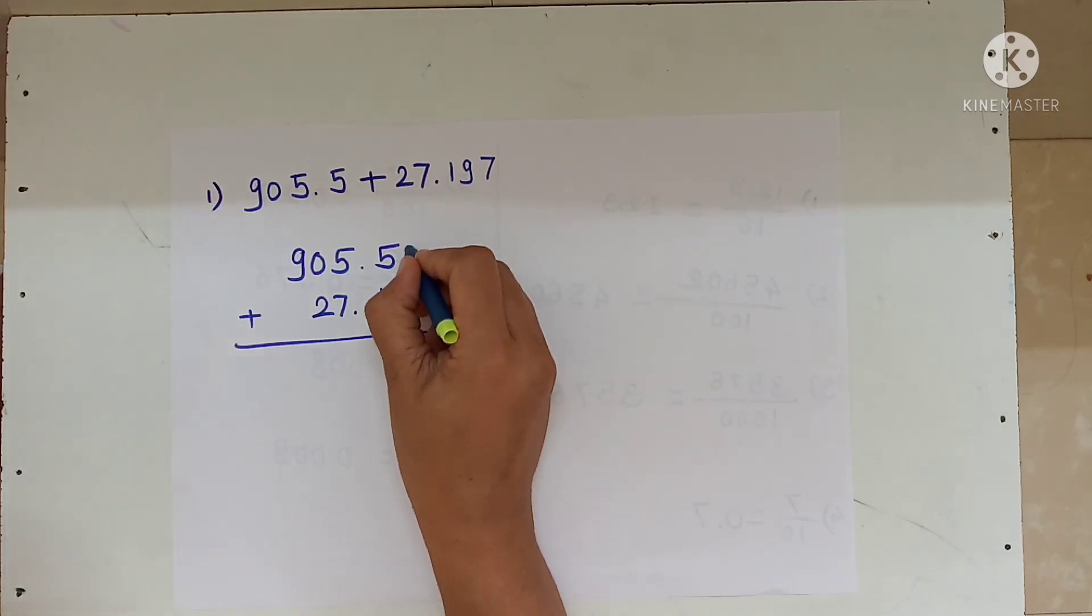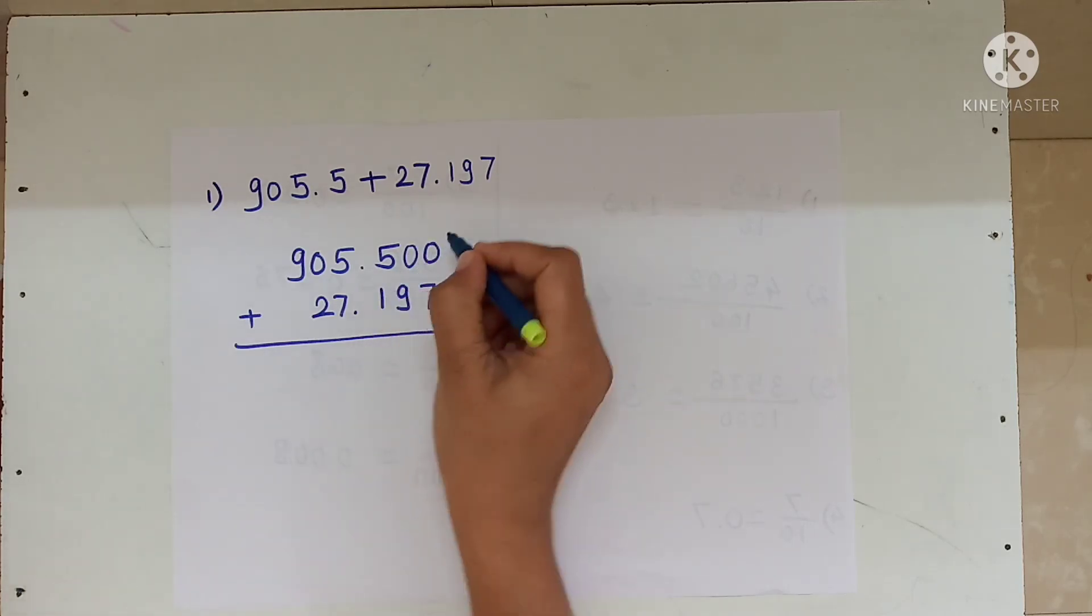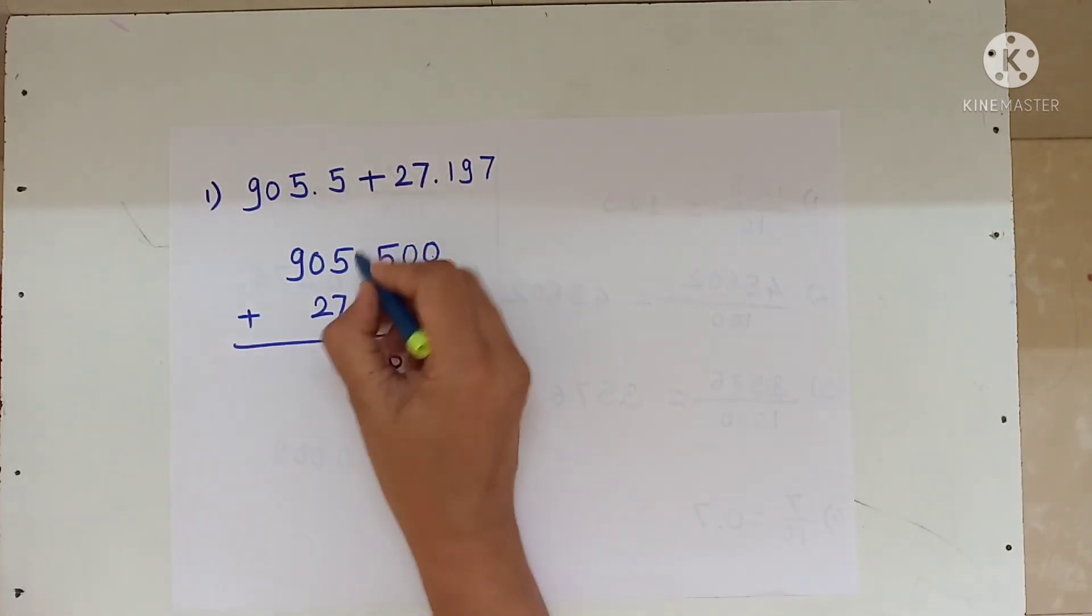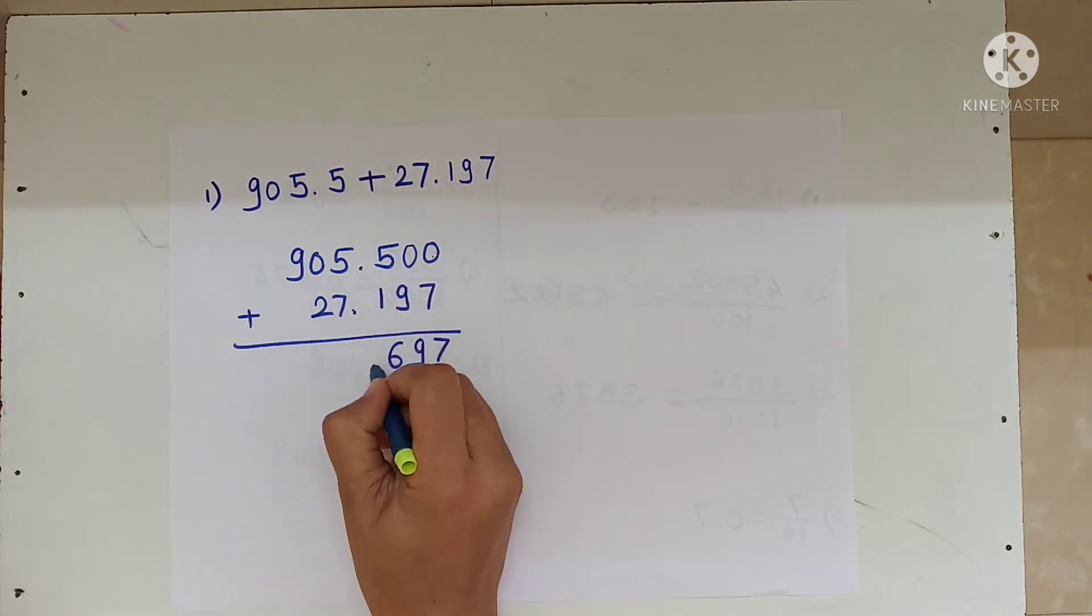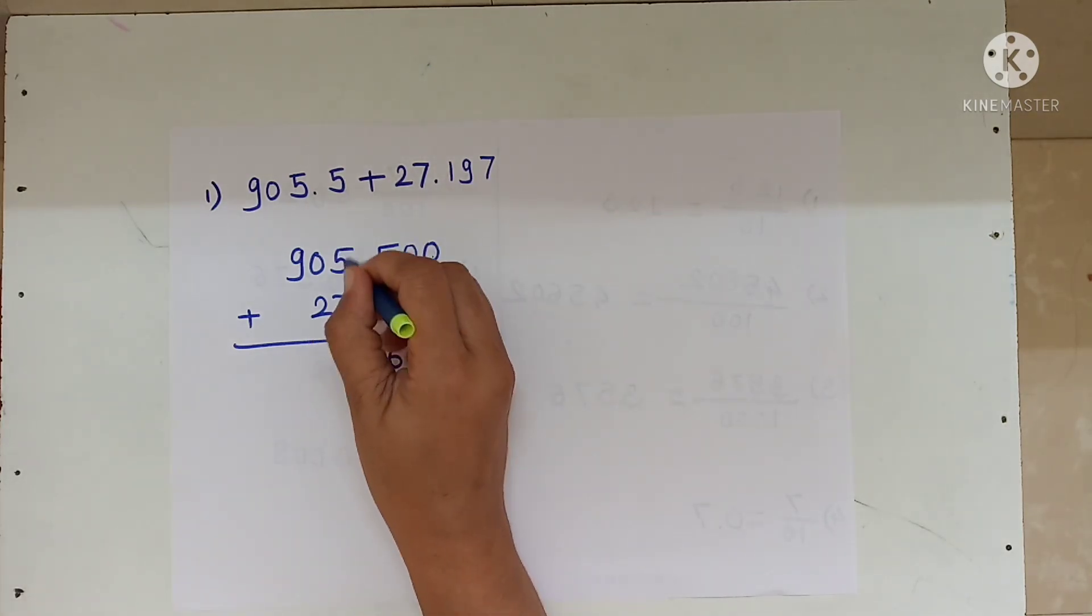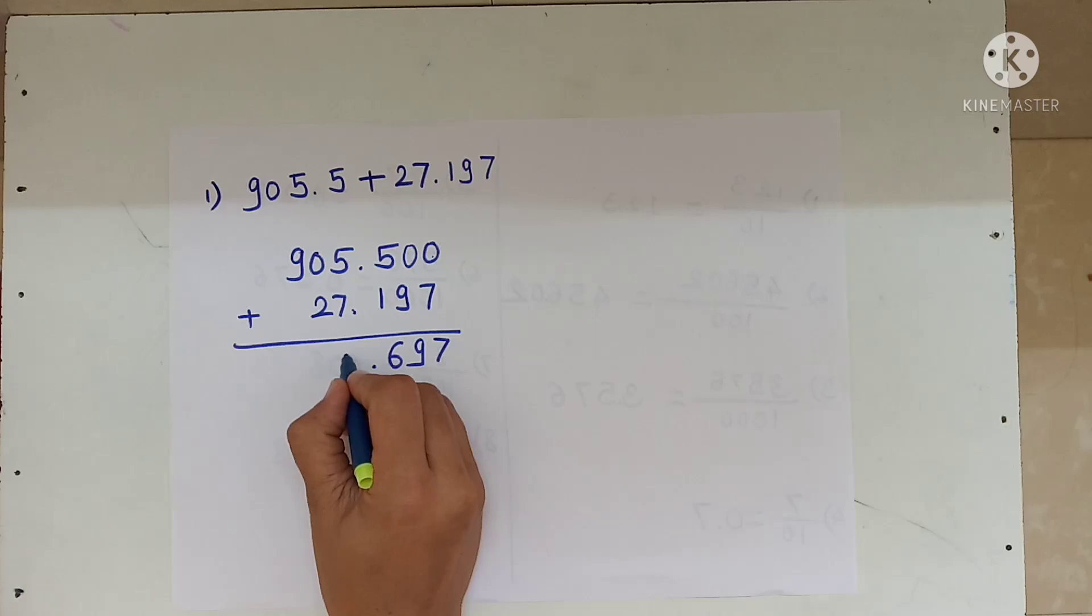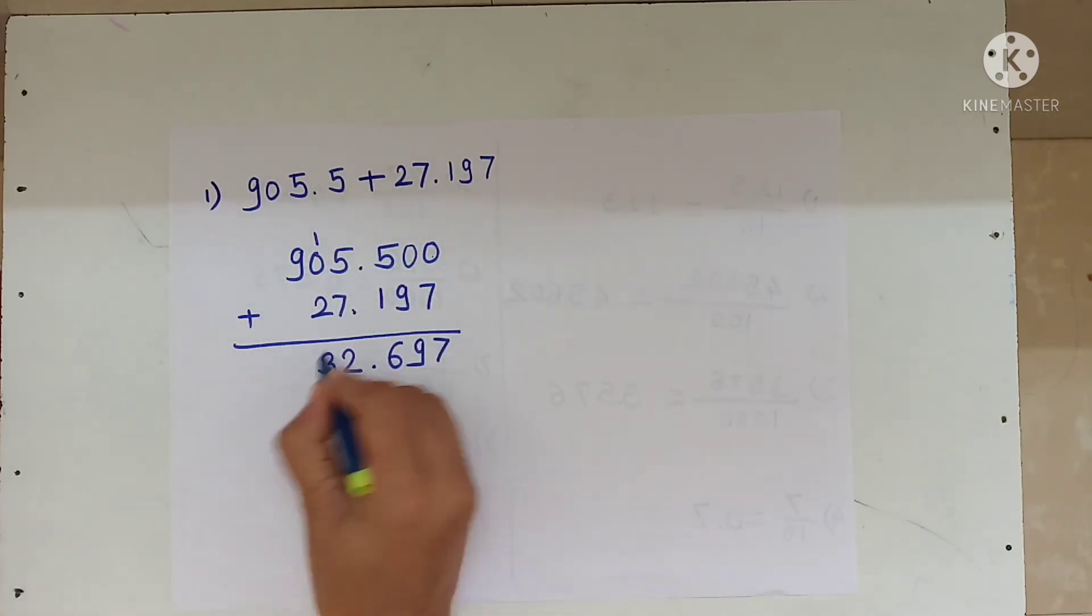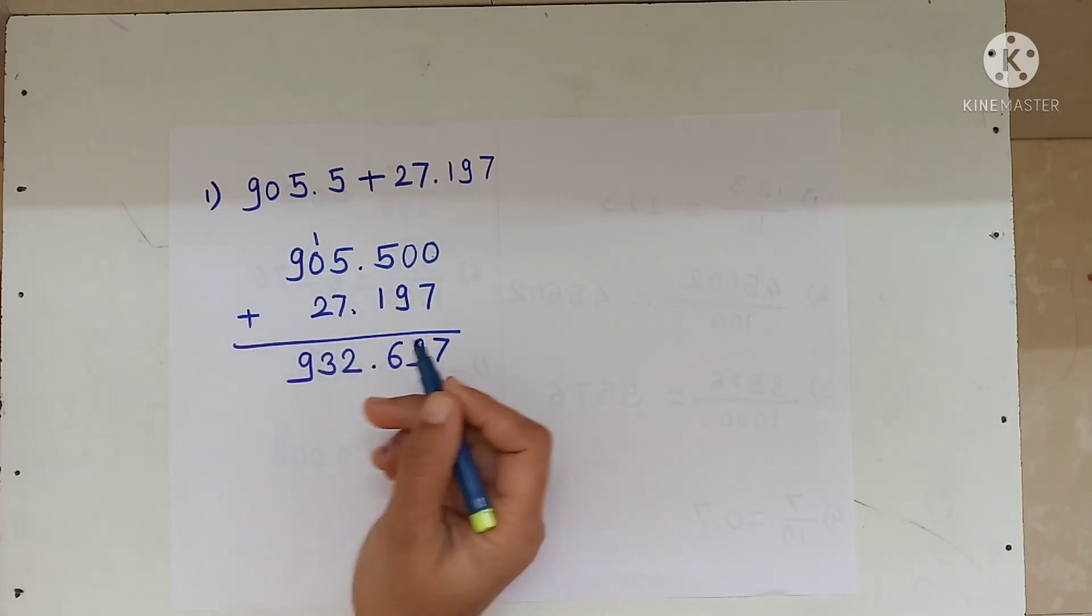Starting from the right: 0 plus 7 is 7. Here we have 9. 5 plus 1 is 6. Point. 7 plus 5 is 12. We carry the 1, so 2 plus 1 is 3, and 9 stays as it is.